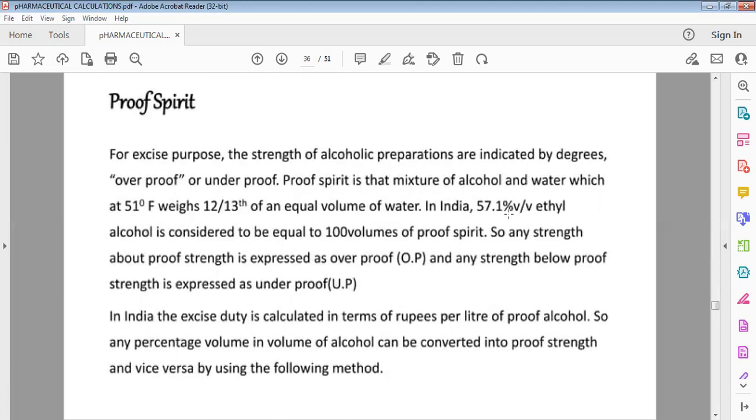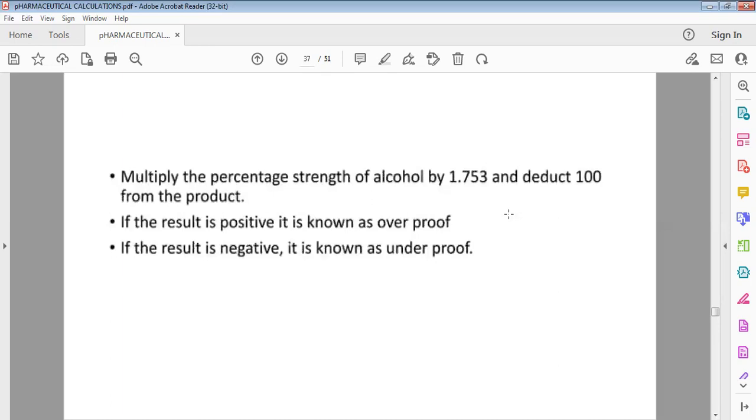Proof spirit is used to express the strength of alcohol preparation. Over proof or under proof. Proof spirit means alcohol and water mixture at 51 degrees Fahrenheit, weight 12/13th of equal volume of water. Ethyl alcohol equals 100 volumes of proof spirit. This is the strength of proof. If the result is positive, it's over proof. If result is negative, it's under proof.